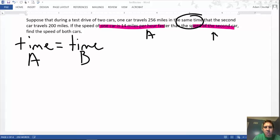So this will be A, this will be B. And going up to the top part of the sentence, it says one car travels 256 miles. And then it says the second car travels 200 miles.